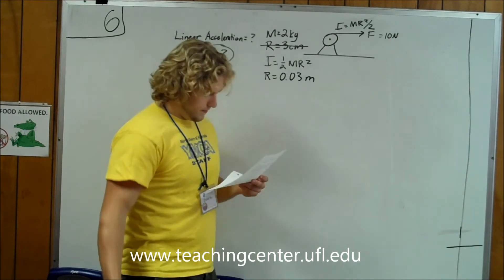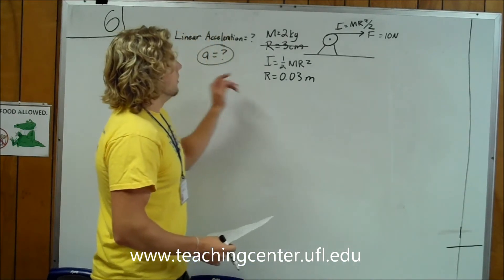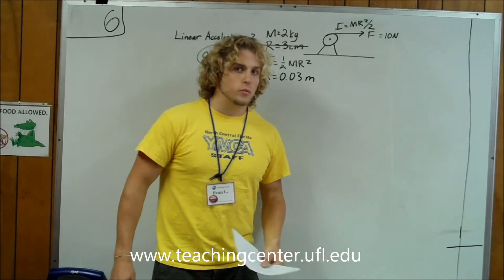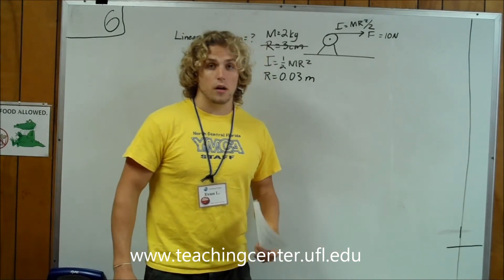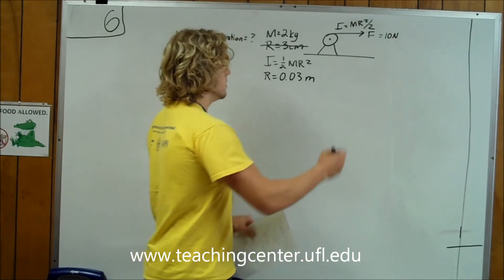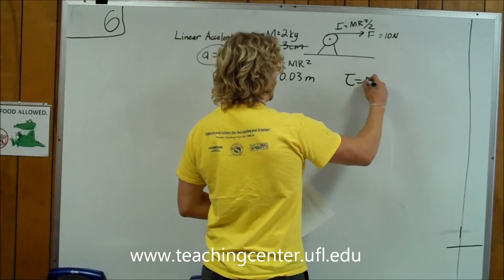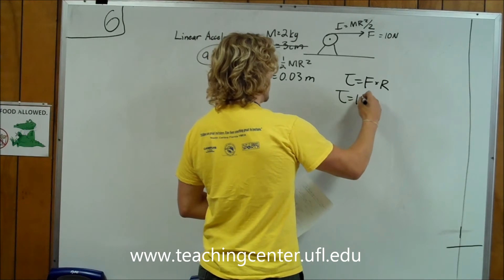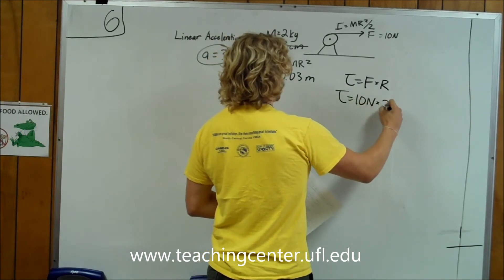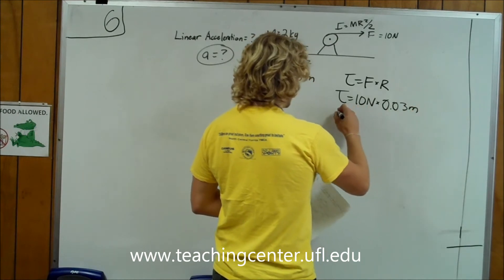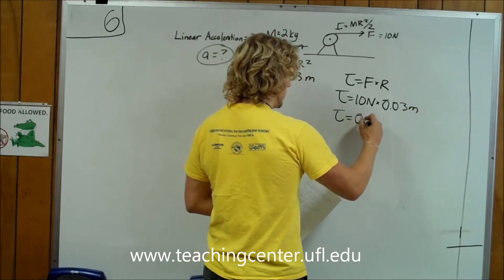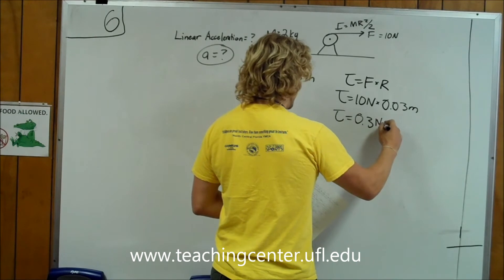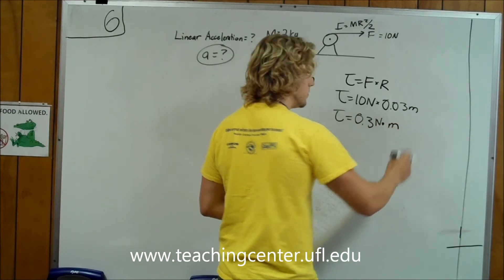So where do we start? With a wheel turning and a linear force, we think torque — and that's not a wrong thought. We do need to think torque in this equation. Torque equals force times radius: 10 newtons times 0.03 meters, so torque equals 0.3 newton-meters.